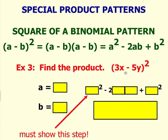So, we have a question, 3x minus 5y squared. The a value here is 3x. Our b value here is 5y.